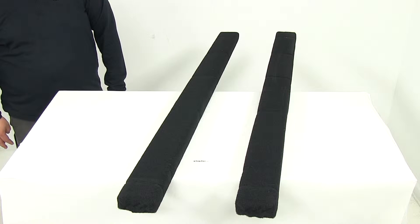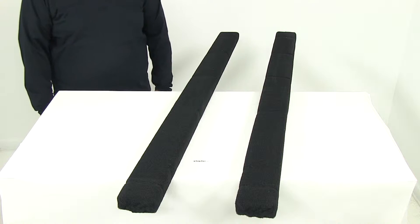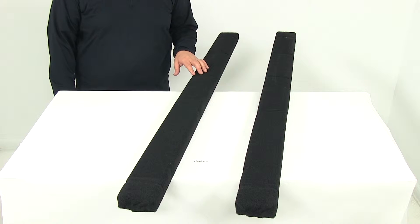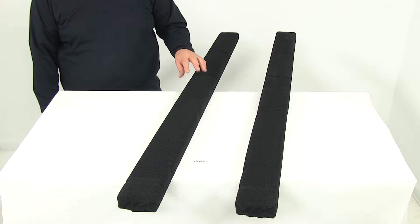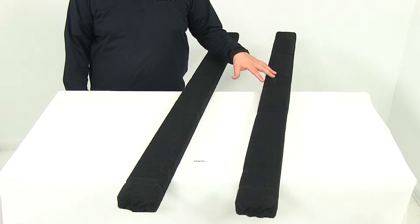Today we're going to be taking a look at part number CE27820. These are the CE Smith Carpeted Bunk Boards for Boat Trailers. They're going to measure about five feet long, and with this part number you're going to get one pair, which is going to be two carpeted wooden bunk boards.